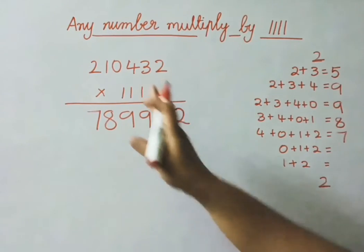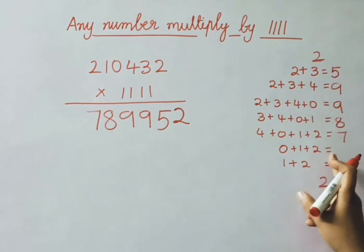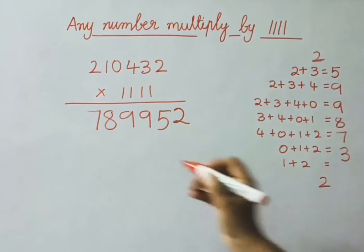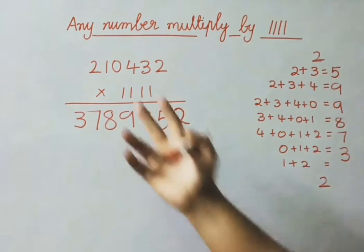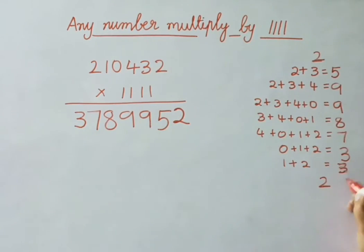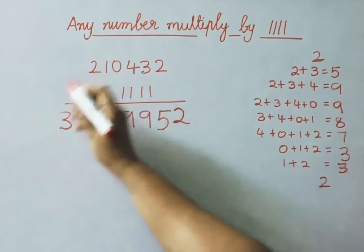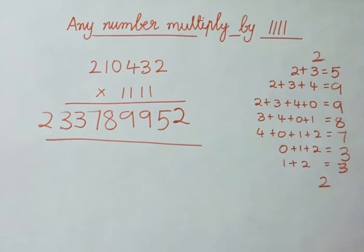Next add 3 digits: 0 plus 1 plus 2, that is 3. Write down in the answer. Next you add 2 digits: 1 plus 2 is 3. Write down the answer 3. Now write down the last digit as it is. So this is our answer.